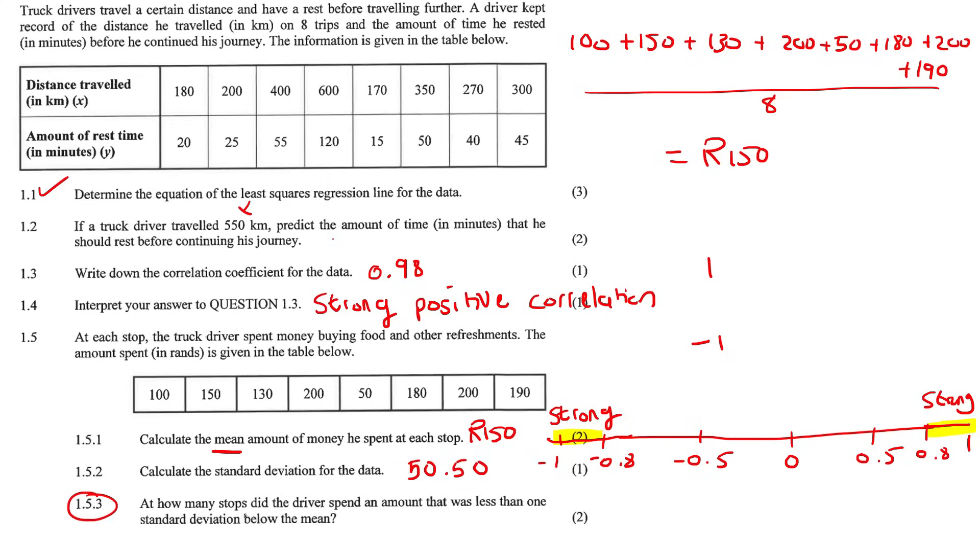This one says, at how many stops did the driver spend an amount that was less than one standard deviation below the mean? The mean is 150. The standard deviation is 50.50. So they want to know, if you go one standard deviation less than the mean. So that means you're going to go 150 minus 50.50. And that will give us 99.50.